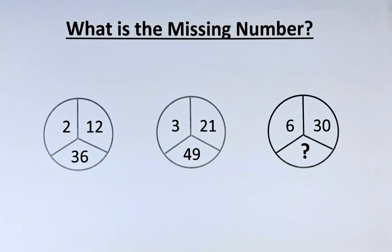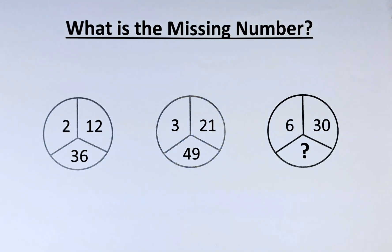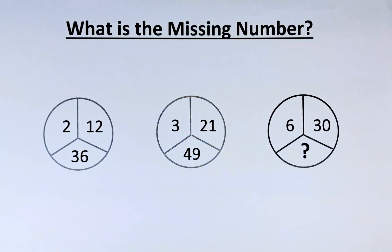There are 3 circles in front of us. In the first circle we have the numbers 2, 12 and 36. In the second circle we have 3, 21 and 49. And in the final circle we have 6, 30 and a question mark.